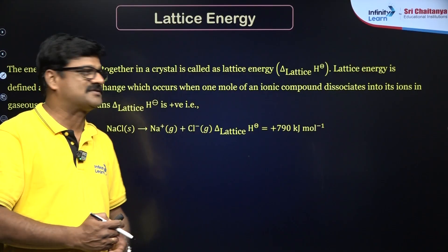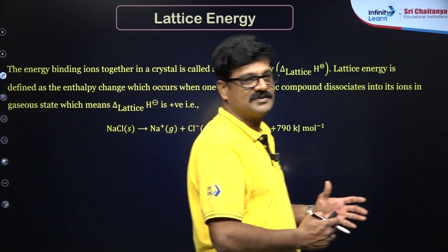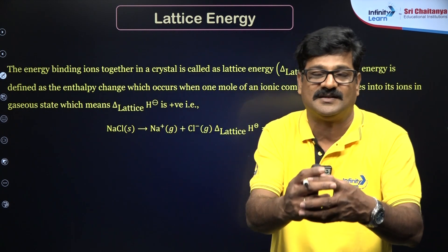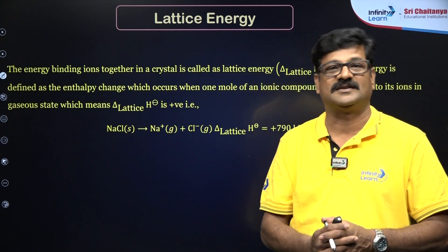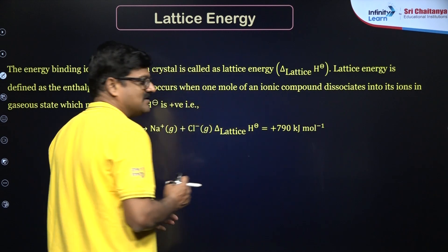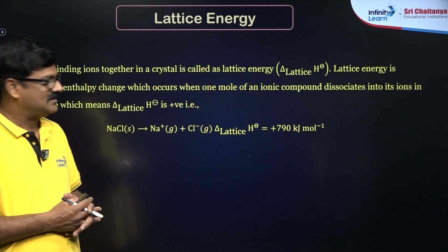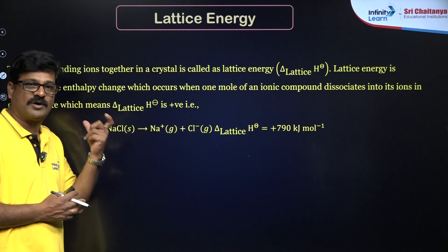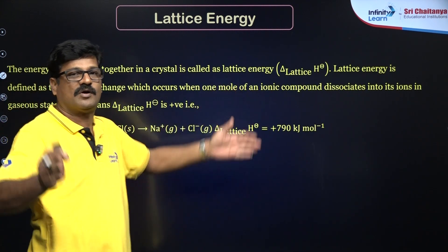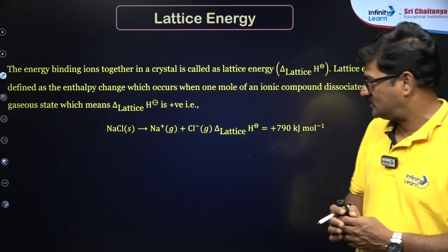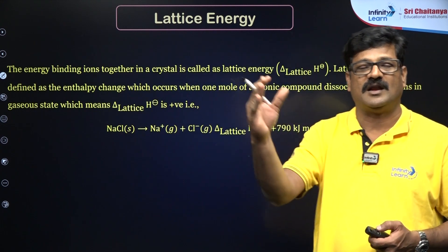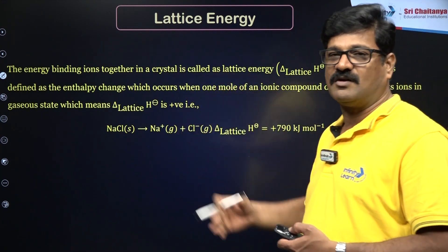Getting into the details — Born-Haber Cycle. Born-Haber Cycle is used to calculate the lattice energy. What is lattice energy? The energy that binds the ionic crystal. The energy binding ions together in a crystal is called lattice energy. The amount of energy required to break 1 mole of solid ionic lattice into its constituent gaseous ions is called lattice energy. So it is an endothermic process.